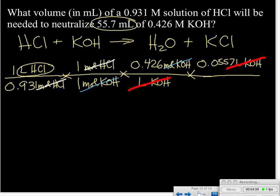When we calculate that out, we find that the volume of the hydrochloric that's required is 0.0255 liters of HCl.